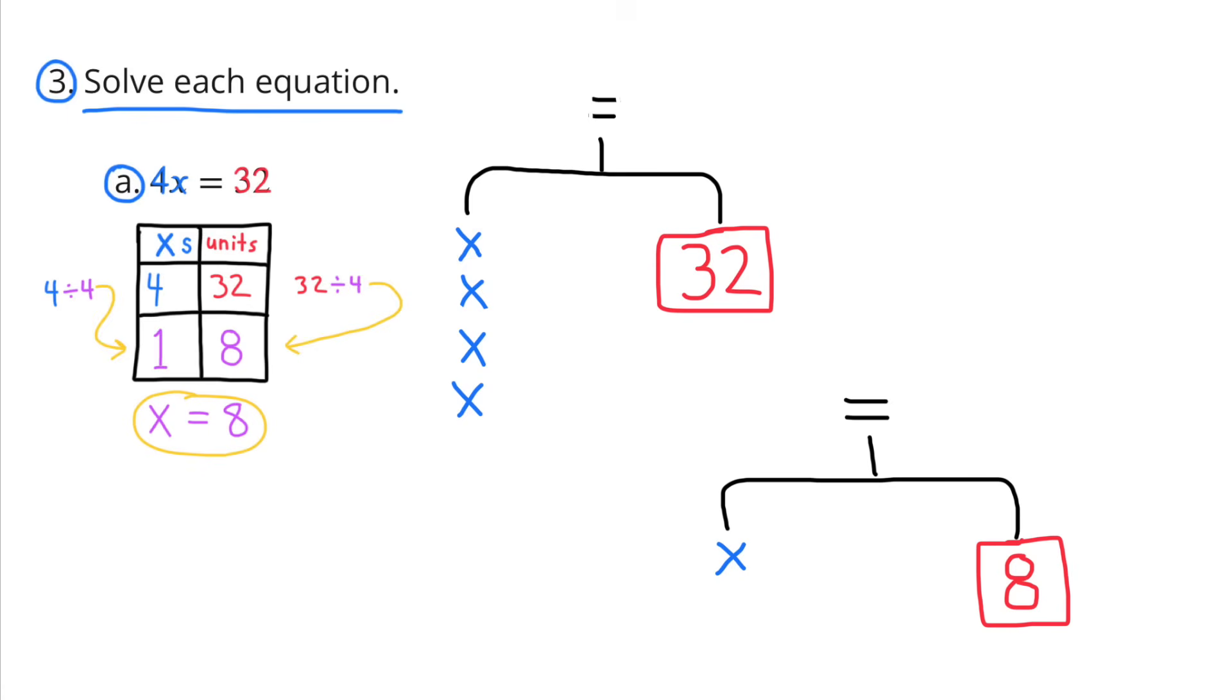I also drew a couple hangers. The first hanger shows the hanger balanced with 4x's on one side and 32 units on the other. The second hanger shows 1x on the left side and 8 units on the right side still in balance. So 8 equals x. So once again, 4x divided by 4 equals 1x, and 32 divided by 4 equals 8. So x equals 8.